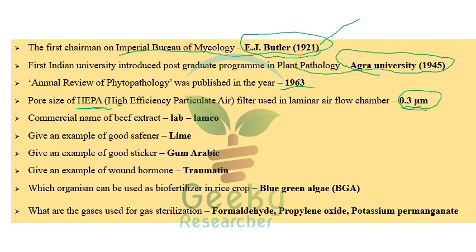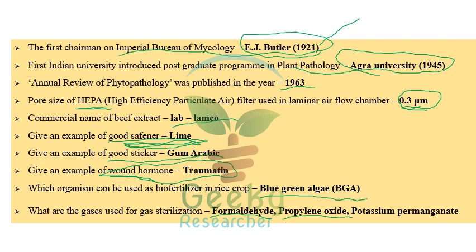The commercial name of beef extract is Lamco. An example of a good safener is lime. An example of a good sticker is gamma rubik. The wound hormone is traumatin. Blue green algae (BGA) can be used as a biofertilizer in rice crops. Gases used for gas sterilization include formaldehyde, propylene oxide, and potassium permanganate.